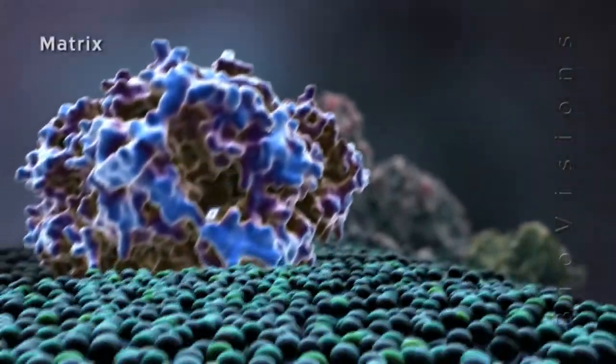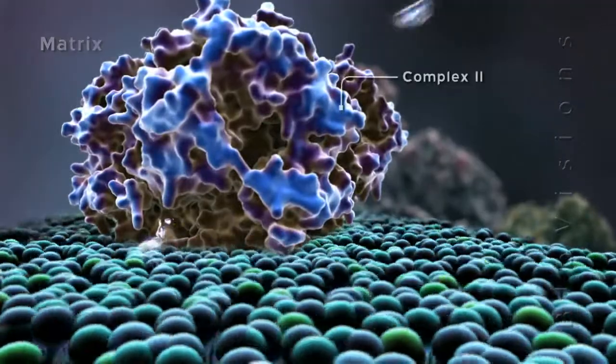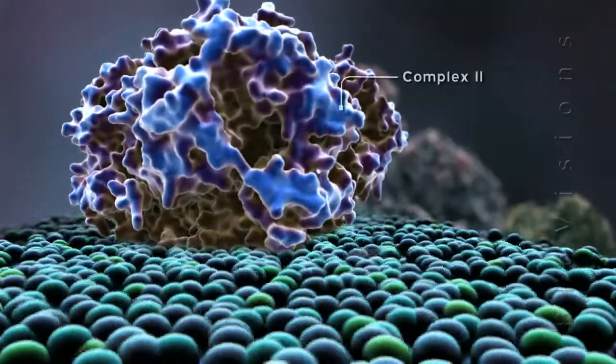Complex 2 accepts pairs of electrons from succinate and transfers them through a series of redox centers to coenzyme Q.